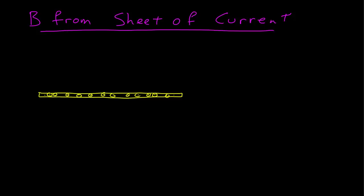In this video we want to find the magnetic field due to an infinite sheet of current. Here's a sheet of current — the little circles with dots indicate the current is coming out of the screen. It's infinite in extent to the side, and we're going to assume the currents themselves are infinite in extent in and out of the screen. We want to find the magnetic field at some height above this sheet.